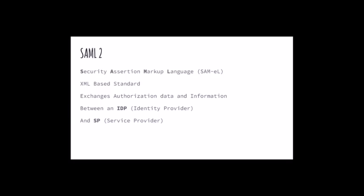So what is it? SAML 2 stands for Security Assertion Markup Language, and it's pronounced 'SAML', similar to 'URL'. It's an XML-based standard. What does it do? It exchanges information securely, usually by using an assertion about a user — it can then enable security contexts on another website, and it establishes trust between two parties, which are an IDP and an SP.